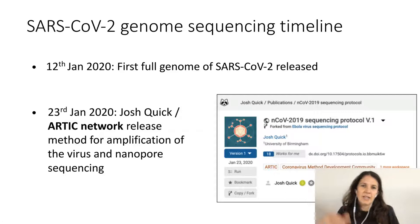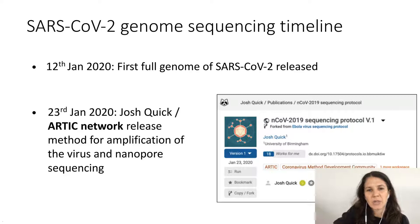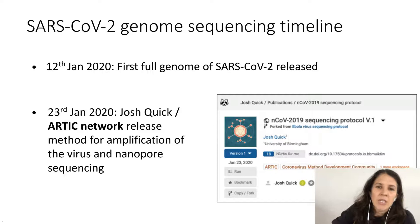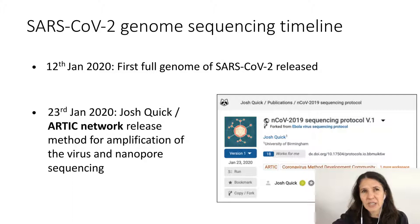Our method is really built on what's called the ARTIC method. In early January of 2020, the first full genome of SARS-CoV-2 was released, achieved by metagenomic sequencing — which is not the most efficient way to sequence the genome for routine use. Then on January 23rd, just 11 days later, Josh Quick and the ARTIC network released the ARTIC method for amplifying the virus and then sequencing it using nanopore sequencing.